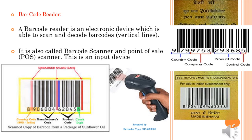Barcode reader is an electronic device which is able to scan and decode barcodes. A barcode consists of black and white vertical lines. It is also called a barcode scanner and point of sale device. It is an input device.